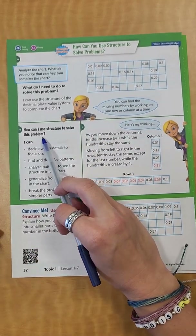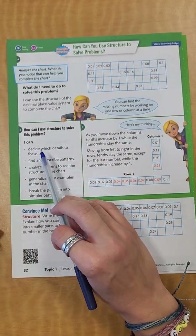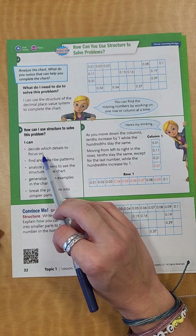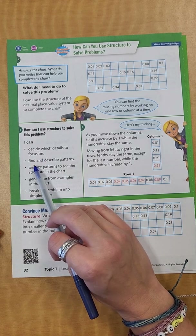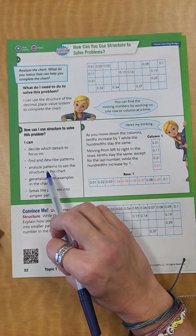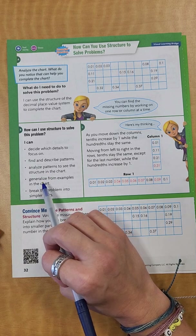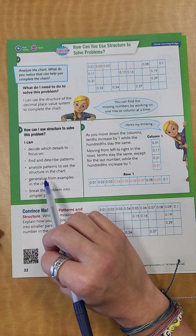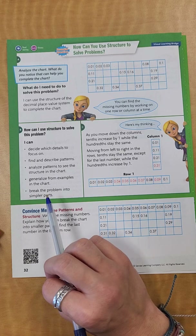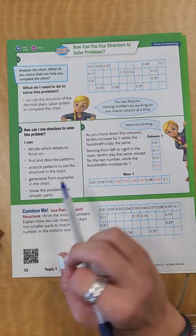So how can I use the structure to solve this problem? I can decide which details to focus on, find and describe patterns, analyze patterns to see the structure in the chart, generalize from examples in the chart, or break the problem into smaller parts.